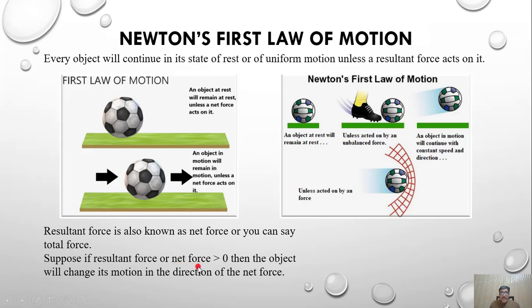If the net force is greater than zero, we also say that there is an unbalanced force. The object is in motion because an unbalanced force is acting on that football.